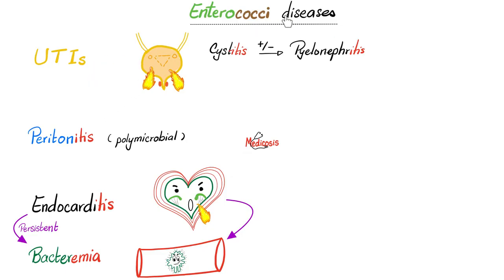Please pause and review. If you have subacute bacterial endocarditis, this can lead to persistent bacteremia — so if you do a blood culture, you will find Enterococcus living in the blood. When it comes to UTIs, some people have no symptoms. Some people have cystitis with frequency, urgency, burning dysuria, and suprapubic pain and tenderness. Some people have pyelonephritis — all of the previous symptoms plus fever and flank pain.